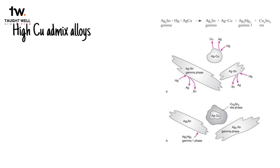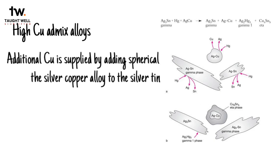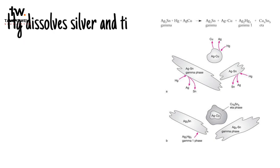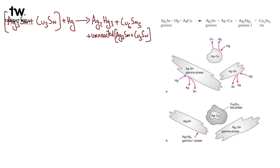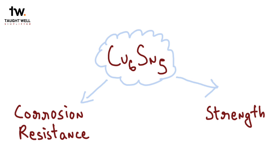In high copper admix alloys, additional copper has been typically supplied by adding spherical particles of the silver-copper alloy to the silver-tin alloy. Therefore, while mercury is dissolving mainly the silver and tin in Ag3Sn as described earlier, very little of the silver-copper particles are dissolved. However, some of the tin and copper that are dissolved by the mercury react to form a copper-tin compound, Cu6Sn5, referred to as the eta prime phase. It is the presence of this copper-tin compound that gives high copper amalgam better corrosion resistance and strength.